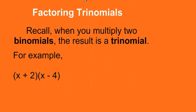Let's take a look at factoring trinomials. Recall, when you multiply two binomials, the result is a trinomial. Now, 'bi' means two, which tells us there's two terms in the polynomial, like x and 2. When we say the result is a trinomial, we're going to be looking for something with three terms.